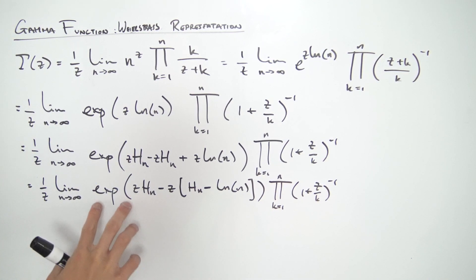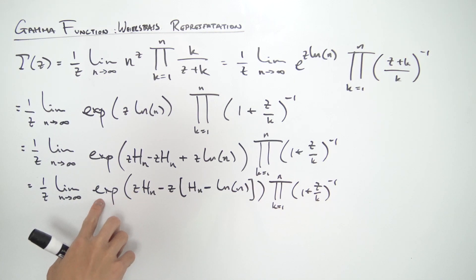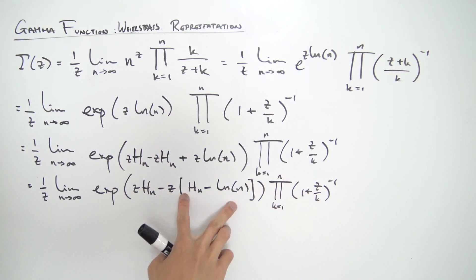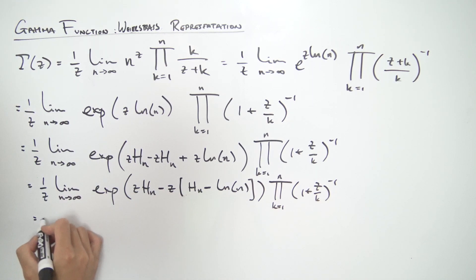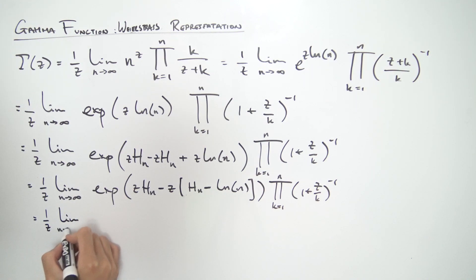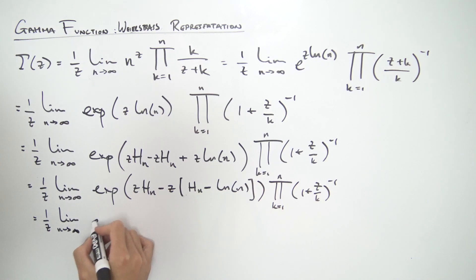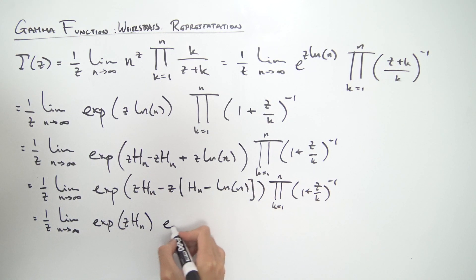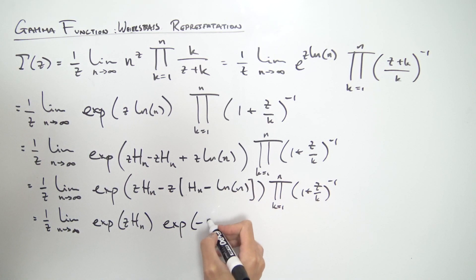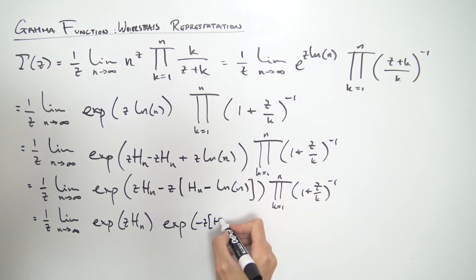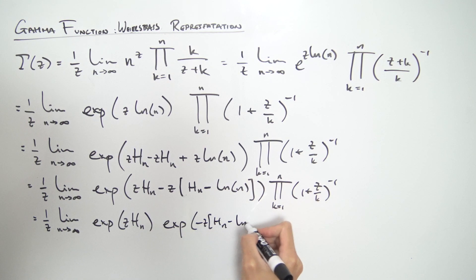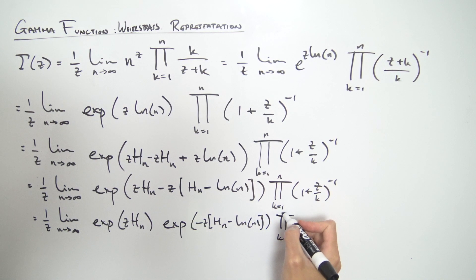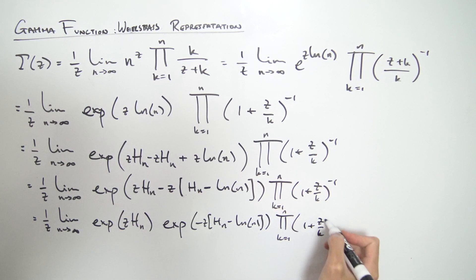Now we can use exponential properties to split this exponential up, because we have essentially e to the something minus something else, and we can split this into e to the first thing times e to the second thing. So we get 1 over z, limit as n approaches infinity, exp(z·H_n) multiplied by exp(minus z·(H_n minus natural log of n)), and we still have the product running from k equals 1 to n of (1 plus z over k) to the minus one.